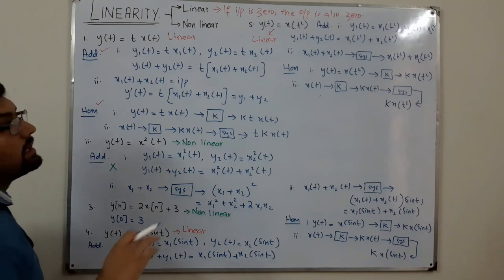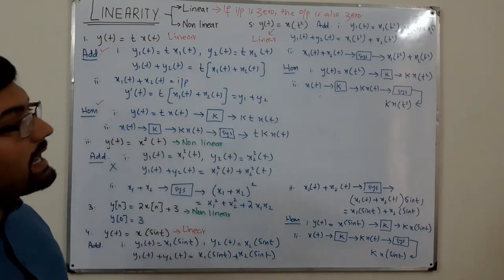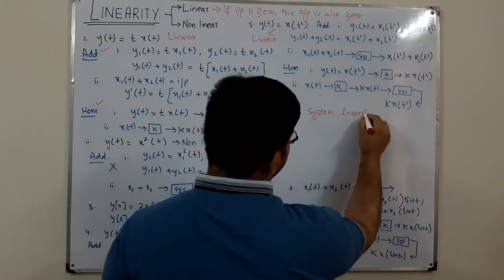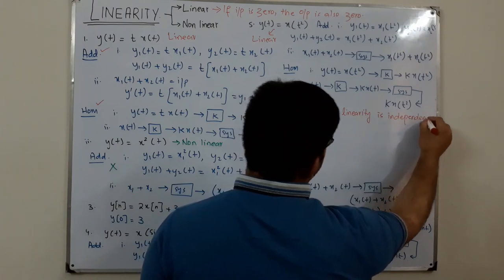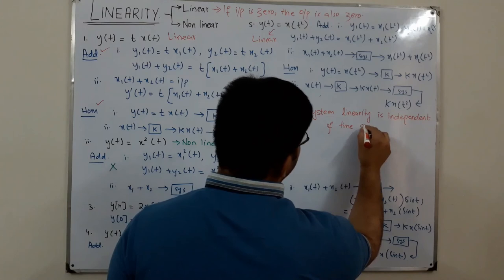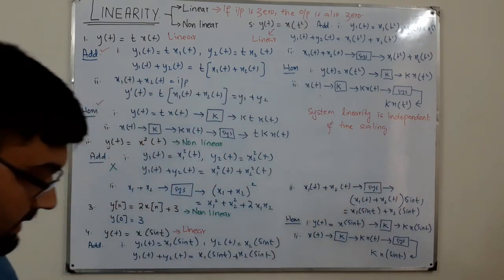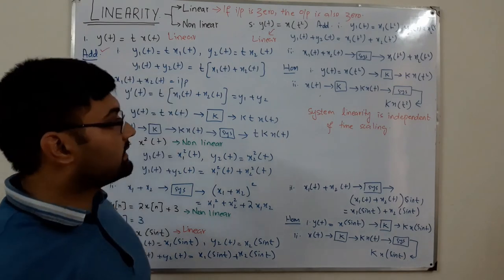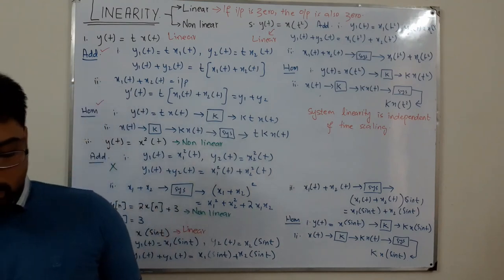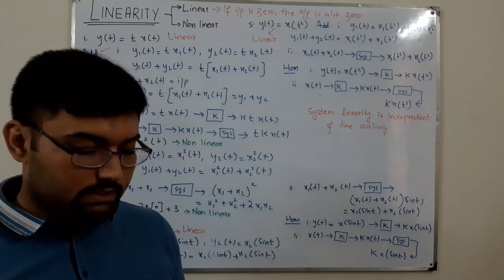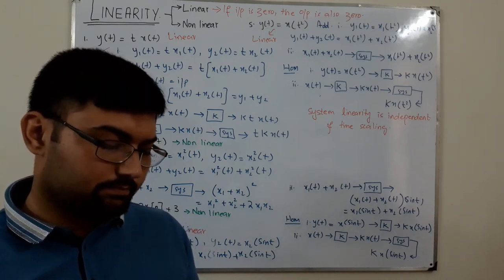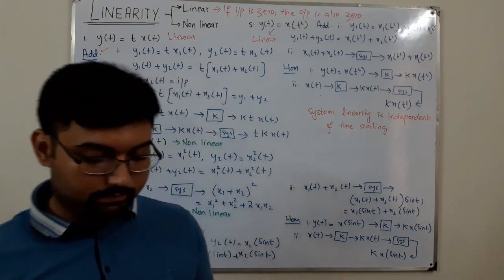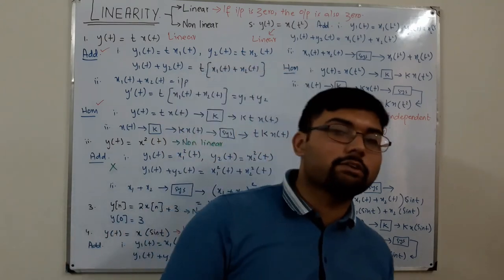Notice that time scaling was involved in both examples 4 and 5, and both were linear. We can conclude that system linearity is independent of time scaling. This video is getting a bit long so I'll continue with more examples in the next video. See you in the next video very soon. Take care of yourself, goodbye.